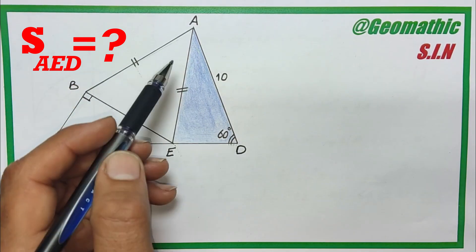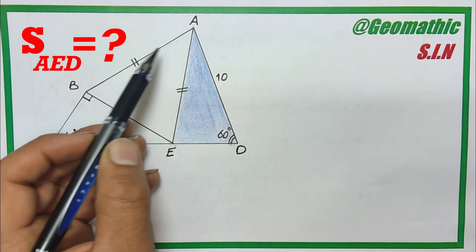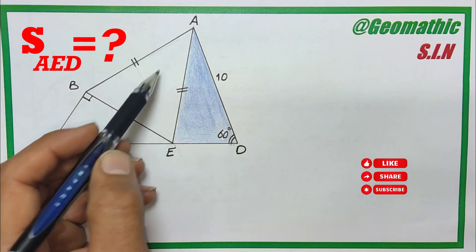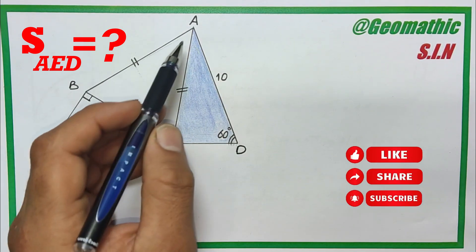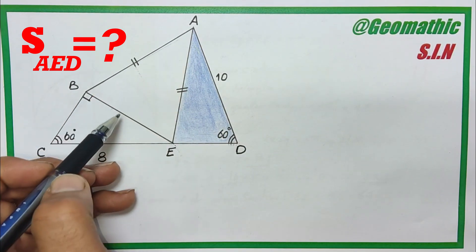Okay, my way: we know in the isosceles triangle ABE, the altitude and the median are the same, so we draw the median here.